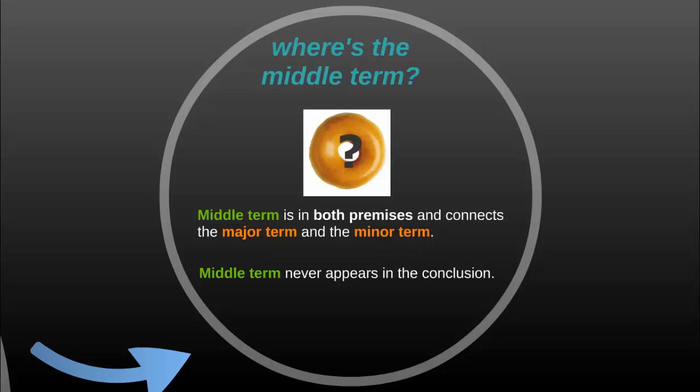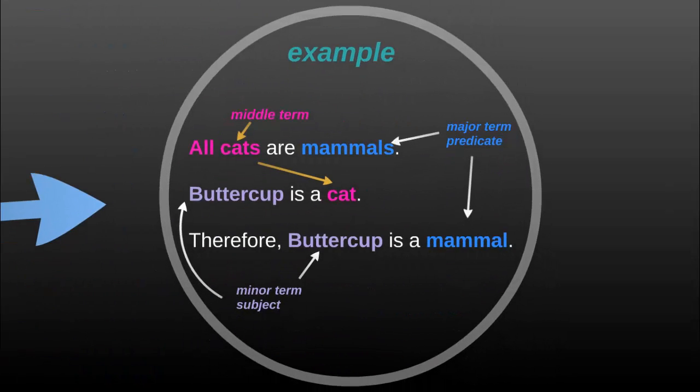The major term will always be the predicate of the major premise. The minor term will be the subject of the minor premise, and there will be a middle term that connects the two premises together. The middle term never appears in the conclusion, but the major term and minor term do.